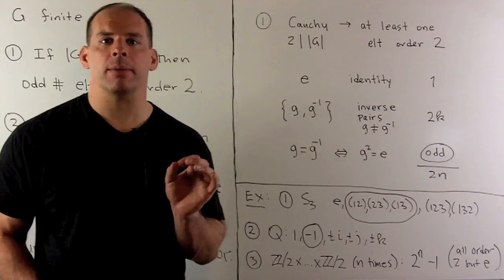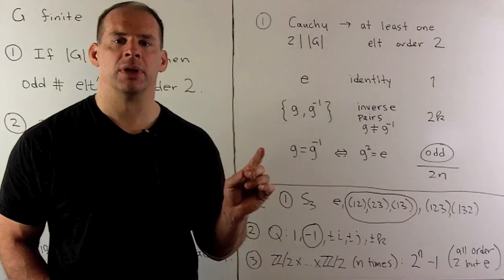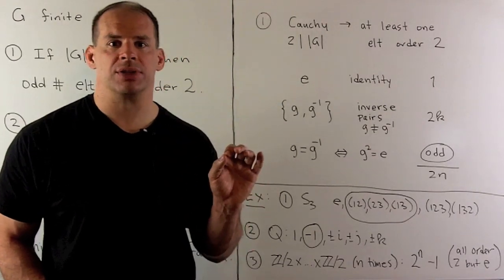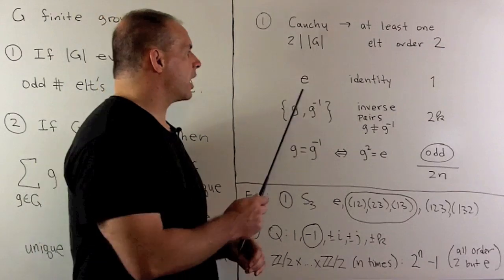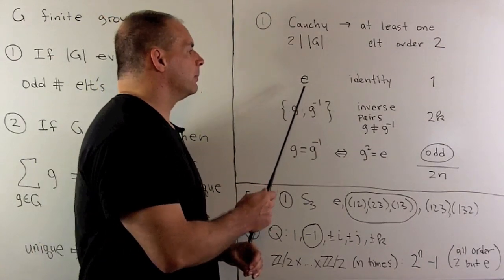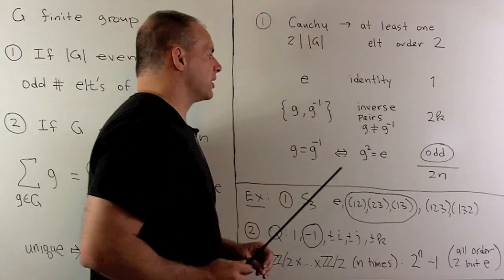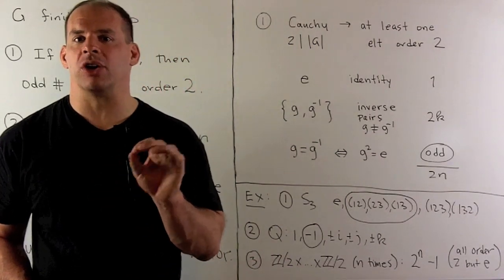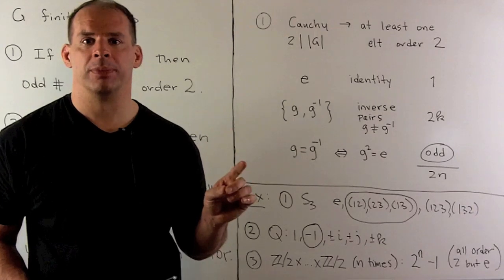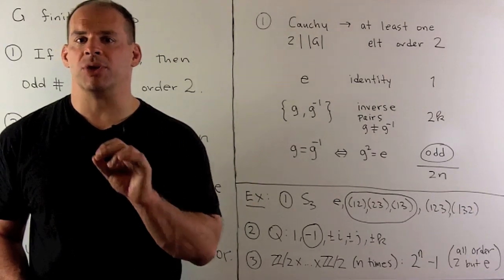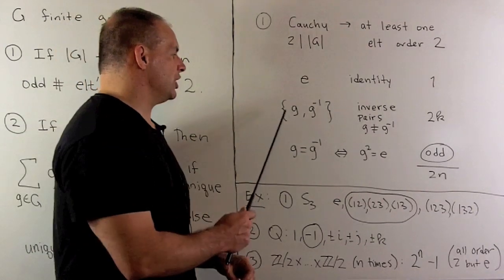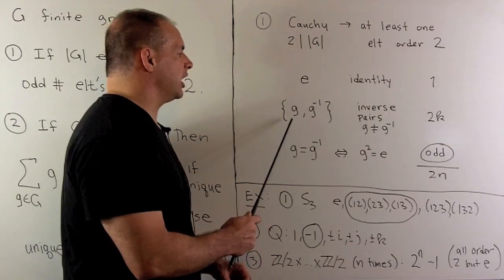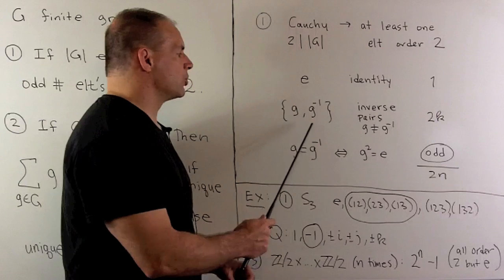To do that, we're just going to count the number of elements in G, and we're going to look at three different types. For the first type, we have the identity element, and there's exactly one element of that type. If we consider the elements of G that are not equal to their own inverse, then those elements are going to occur in pairs — G and G inverse — and we note the inverse of G inverse is just G, so these pairs are closed under inversion.